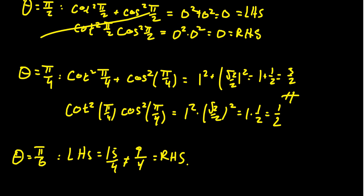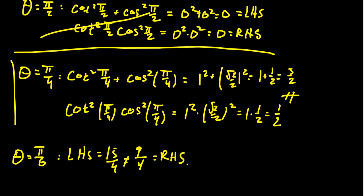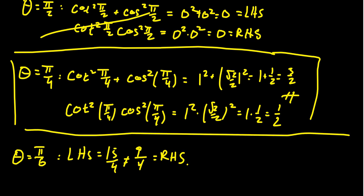So to show that two trigonometric functions are not equal to each other, you just need one counterexample. This counterexample at pi/4 is sufficient evidence that the two expressions are not equal to each other. We just need one counterexample — we don't need many.